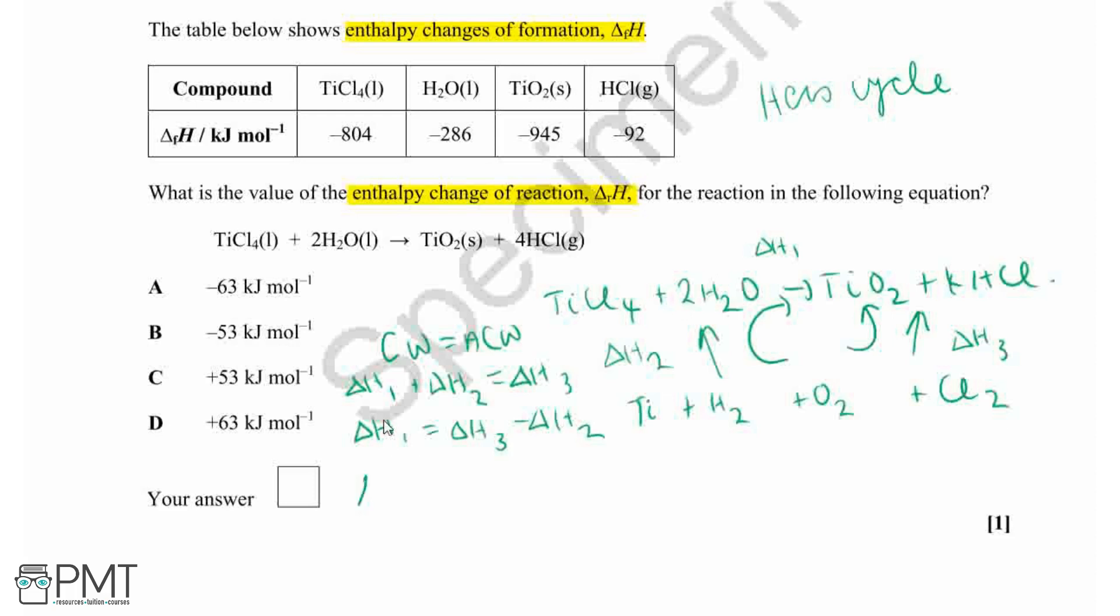Now let's start to plug in some numbers from the table. From our enthalpy change three, we've got our enthalpy change of formation of that titanium oxide plus four lots of the enthalpy change of formation of our hydrogen chloride. We need to include our molar values for the things which we're forming.